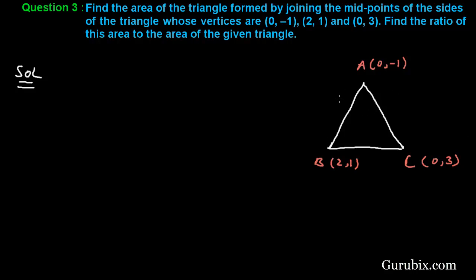First of all, we shall find the midpoints of all the sides of the triangle. Suppose D is the midpoint of side BC with coordinates (X, Y), E is the midpoint of AC with coordinates (A, B), and F is the midpoint of AB with coordinates (M, N). We shall find the coordinates of D, E, and F, then find the area of triangle DEF, and then find the area of triangle ABC.